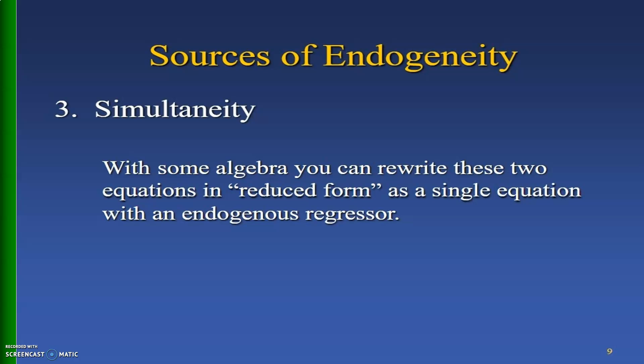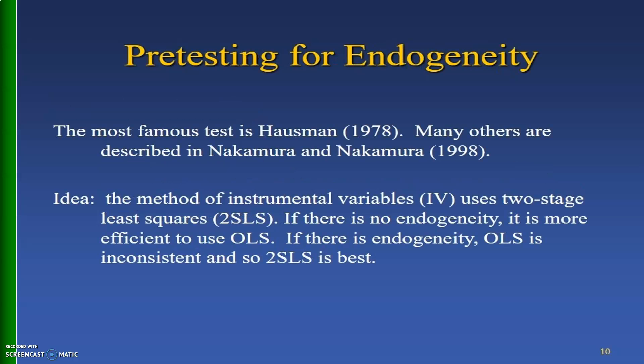With some algebraic manipulation, these two equations can be rewritten in reduced form as a single equation with an endogenous regressor. Pre-testing for endogeneity: can we test whether a variable is endogenous? One of the most famous tests is the Hausman (1978) test; others are described in Nakamura and Nakamura (1998). The idea is that instrumental variables uses two-stage least squares (2SLS). If there is no endogeneity, OLS is more efficient, but if there is endogeneity, OLS will be inconsistent and 2SLS is the best alternative.